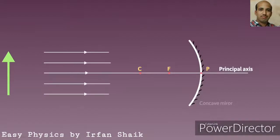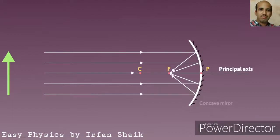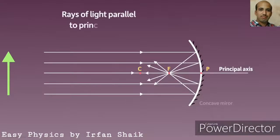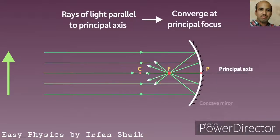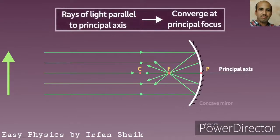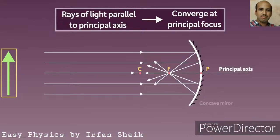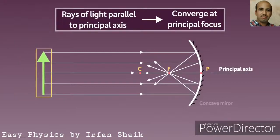Similarly, we can take any object at infinity. The rays of light from the object will be parallel to each other. After reflection, they meet at the focus. So the rays of light parallel to the principal axis, after reflection, converge at the principal focus. This rule is applicable for any object at any distance — its light rays travel parallel to the principal axis and converge at the principal focus after reflection.